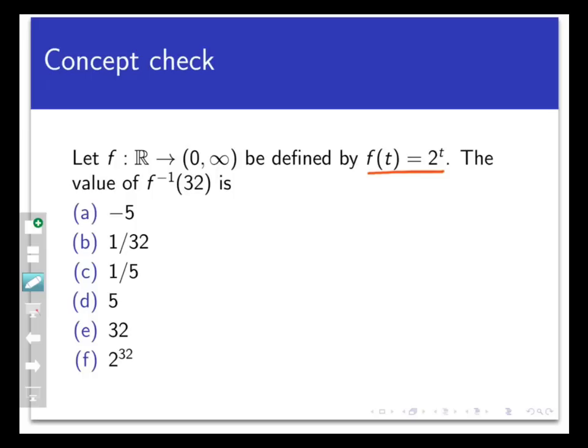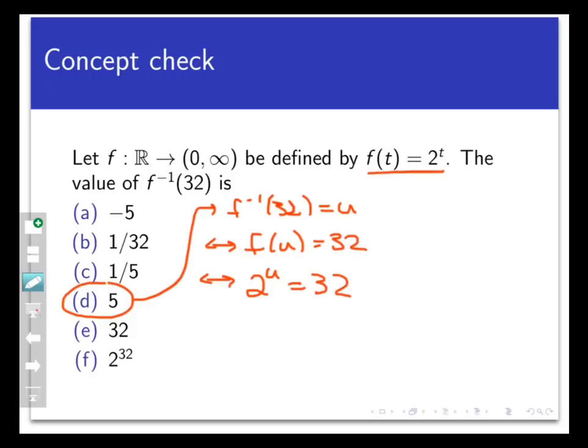The answer here is f inverse of 32 equals 5. We're just going to use the rule for calculating f inverse. Whatever f inverse of 32 is, let's call it u, then f inverse of 32 equals u means f of u equals 32. I'm looking for a number u such that 2 to the u power equals 32. I can solve this equation using logs, or I can just use my knowledge of powers of 2 and realize that 2 to the 5th power is 32. So that means f inverse of 32 is 5 because f of 5 is 32.